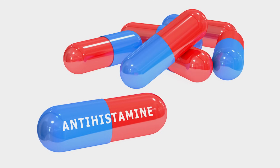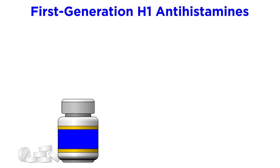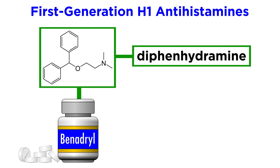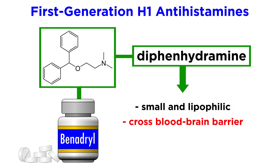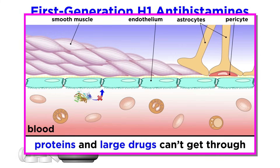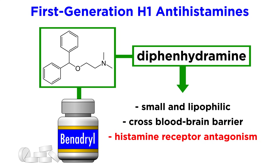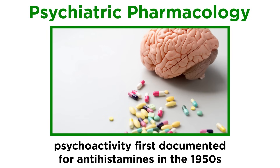Now let's get more specific about the drugs. There are two generations of H1 antihistamines. First-generation antihistamines, such as diphenhydramine, commonly known by the brand name Benadryl, are relatively small and lipophilic molecules, allowing them to cross a protective barrier that shields our brain called the blood-brain barrier, which we learned about in the biopsychology series. Once in the brain, the main psychoactive effect observed through histamine receptor antagonism is drowsiness and sedation. This psychoactive relationship was first documented in the 1950s, and led to an explosion of research interest in psychiatric pharmacology.